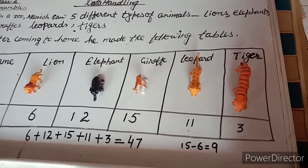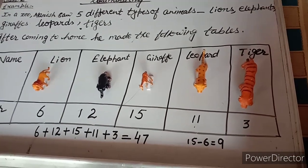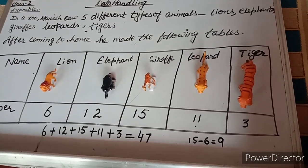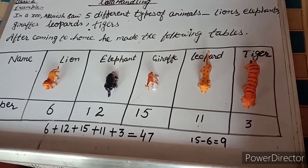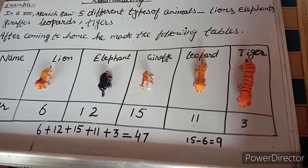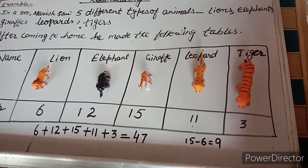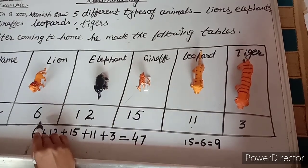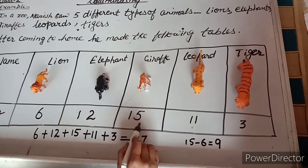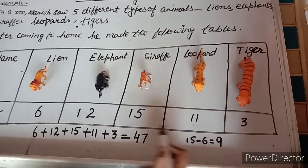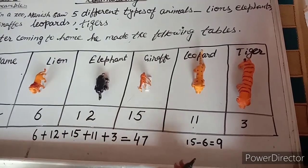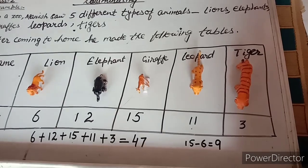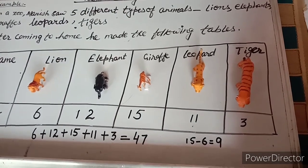Which animal did he see in maximum number? Maximum means the most. Looking at 6, 12, 15, 11, 3 — the greatest is 15, so the answer is giraffe.